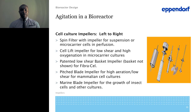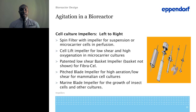For cell culture impellers, from left to right: you have a spin filter with impeller for suspension cells or microcarrier cells in perfusion; a cell lift impeller for low shear, high oxygenation, and microcarrier culture; a low-shear basket impeller; a pitched blade impeller for high aeration with low shear for mammalian cell culture; and a marine blade impeller for the growth of insect cells and other cultures.